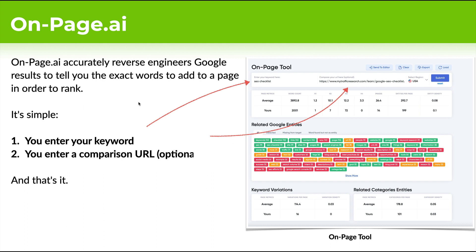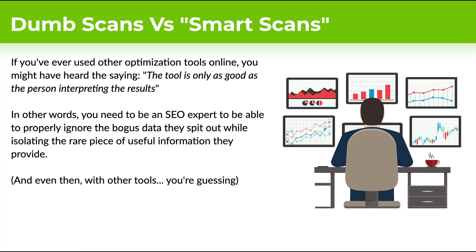OnPage.ai accurately reverse engineers Google's results to tell you exactly what to add to a page in order to rank. The way you use it is very simple: you enter your keyword, and optionally you enter a comparison URL. If you already have a page up, you just enter it here and click submit — and you're done. There's no setting up projects, no complicated process, no list of 15 options. You just select check and you're done. We'll spit out the whole report for you and take care of everything else.